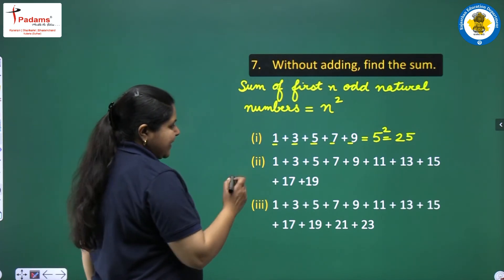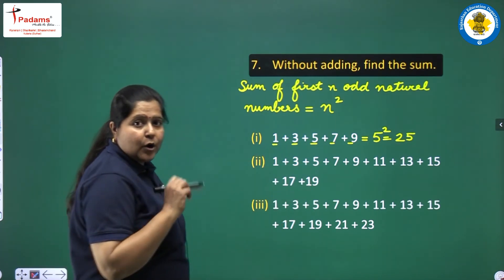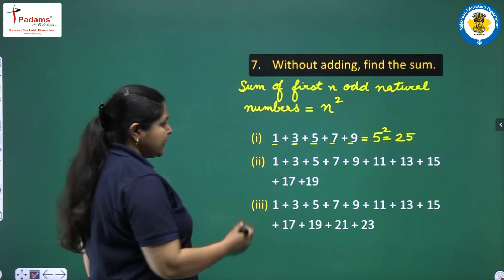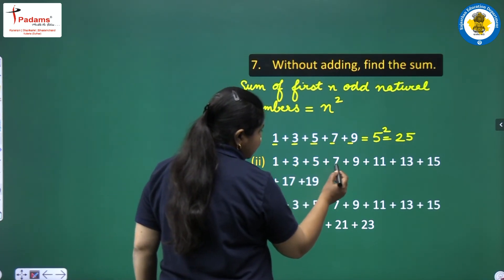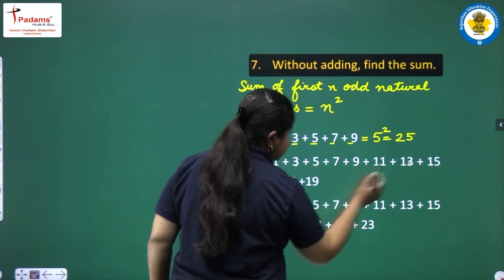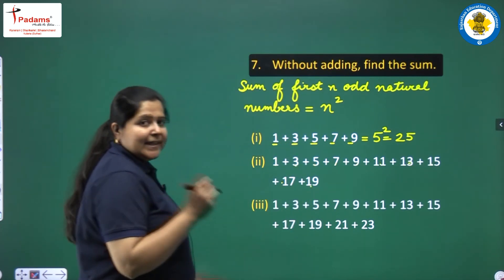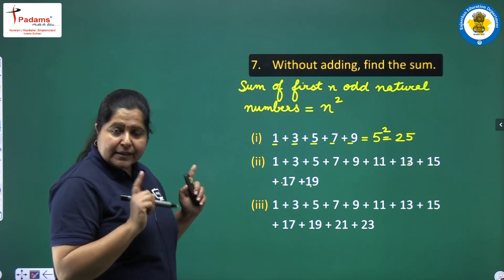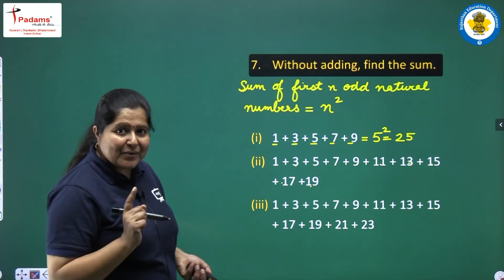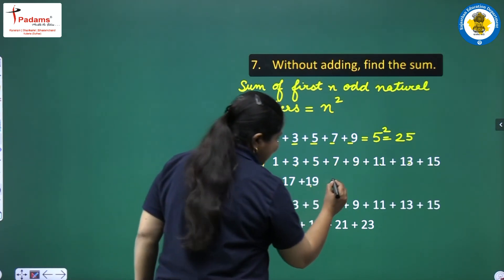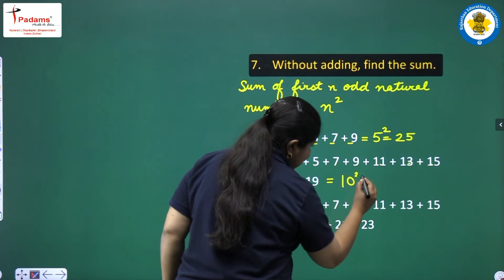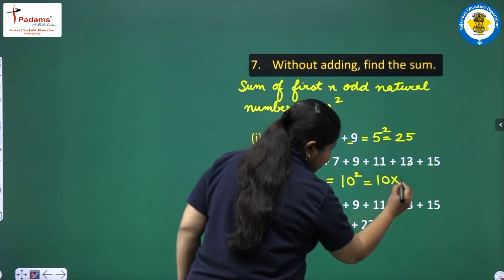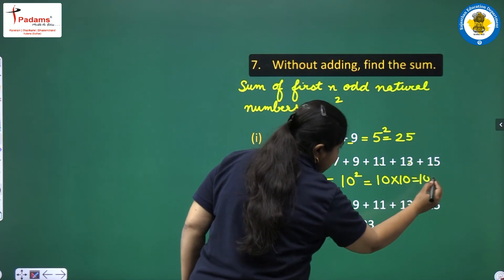For the second part, count the odd numbers: 1, 2, 3, 4, 5, 6, 7, 8, 9, 10 — they are 10 odd natural numbers. So their sum should be equal to 10 squared. And 10 squared is 10 into 10, which is 100.